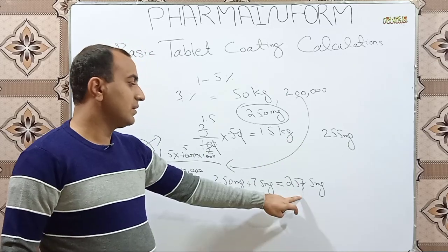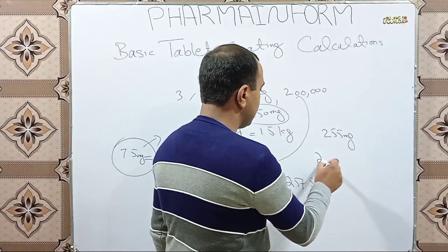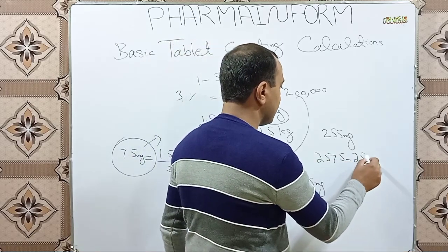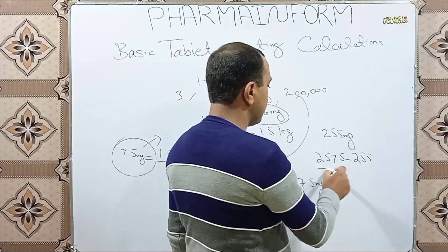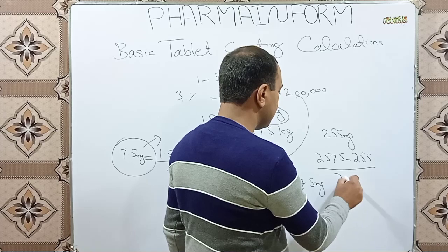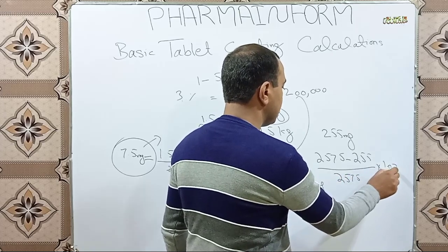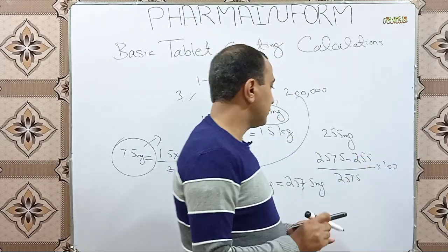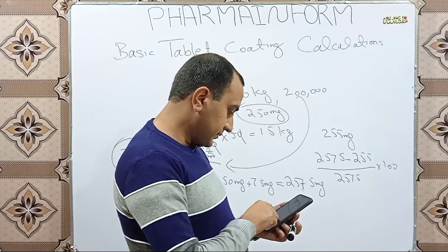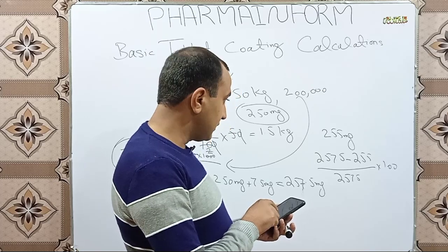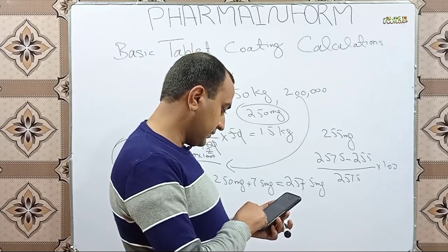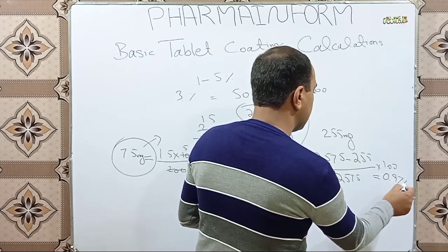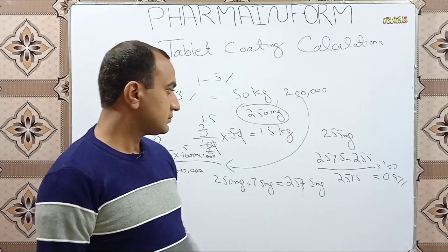To calculate the loss after coating: theoretical weight is 257.5 mg, practical weight is 255 mg. The formula is: (257.5 − 255) / 257.5 × 100 = 0.97%. So a 0.97% loss will be observed after the coating process.